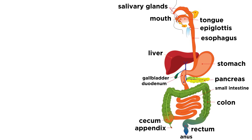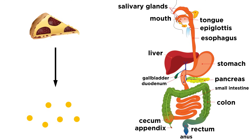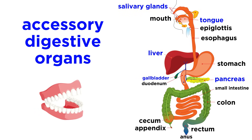The digestive system can be split up into two parts. The alimentary canal, also known as the gastrointestinal tract, or GI tract, is essentially one long continuous tube that starts at your mouth, where food goes in, and winds all the way down the body to end at the anus, where some of the food comes back out. Along the way, much of the food is broken down into molecular fragments that can be absorbed through the lining of this tract and into the blood that surrounds. The rest of the digestive system is made up of accessory digestive organs like the teeth, tongue, gallbladder, salivary glands, liver, and pancreas, which are not part of the GI tract, but have a considerable role in digestion.